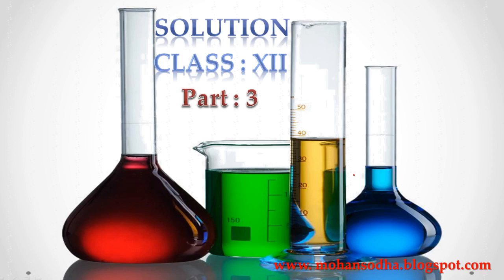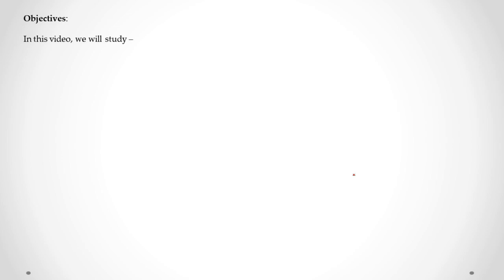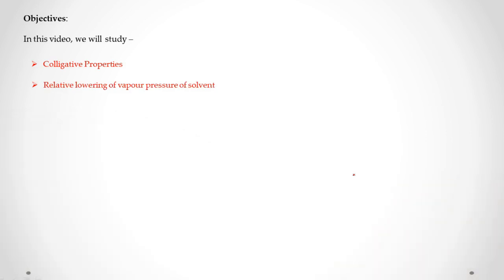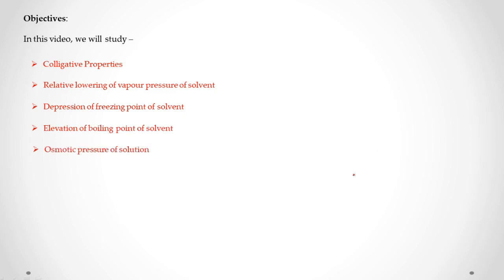Namaskar, this is the third part of our second chapter solution. In this video, we will study colligative properties: relative lowering of vapor pressure of solvent, depression of freezing point of solvent, elevation of boiling point of solvent, osmotic pressure of solution, reverse osmosis, abnormal molar mass of solute, and Van't Hoff factor. This part is most important, so watch carefully.